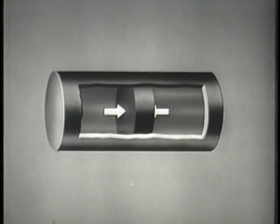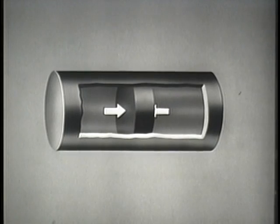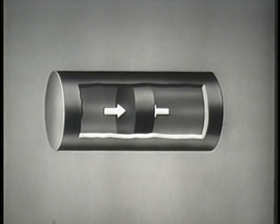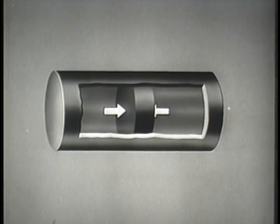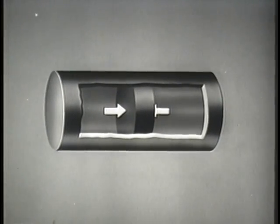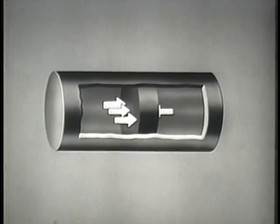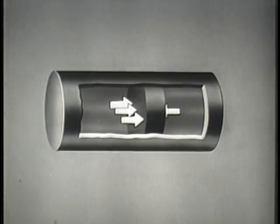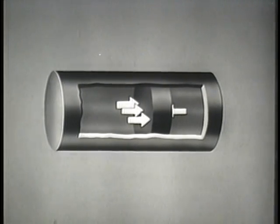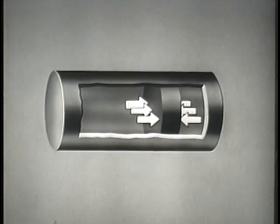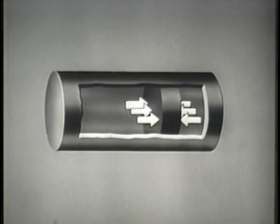Pressure differential is illustrated by this section of pipe. In the pipe is a movable block. The arrows on either side of the block represent equalized pressure. As pressure on one side of the block is increased, a pressure imbalance or differential is created in the pipe, moving the block in the direction of the lower pressure. The moment the pressure on the opposite side of the block is increased to equalize the pushing force, the motion of the block is stopped.